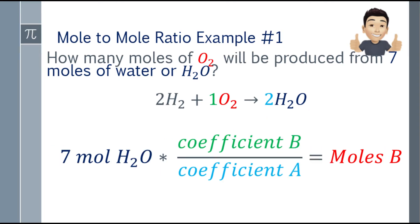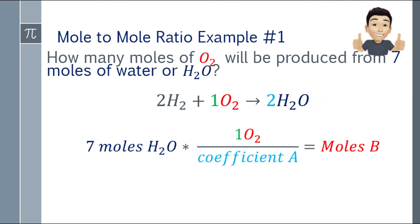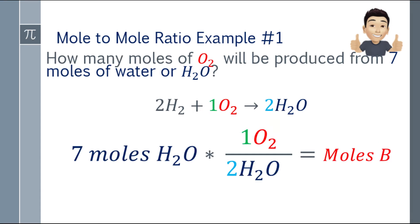Substituting: moles A is 7 moles H2O. Coefficient B is 1 O2, and coefficient A is 2 H2O. You'll notice that the H2O units cancel out.